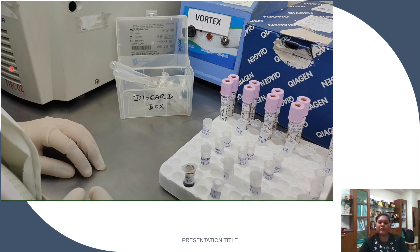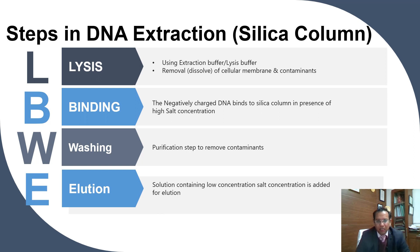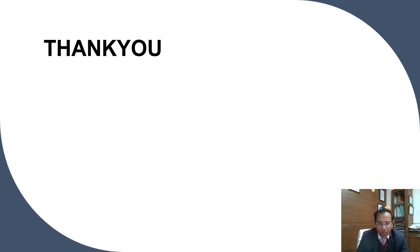Thanks Ayushi. To reiterate the steps in DNA extraction through the silica column, we can remember it by the mnemonic LBWE — like LBW in cricket. L is for Lysis: we use an extraction or lysis buffer to remove cellular membranes and contaminants, releasing the DNA. B is for Binding: the negatively charged DNA binds to the silica column in the presence of high salt concentration. W is for Washing: we remove impurities and contaminants. E is for Elution: a low-salt solution elutes the DNA, making it ready for quantification and downstream use.